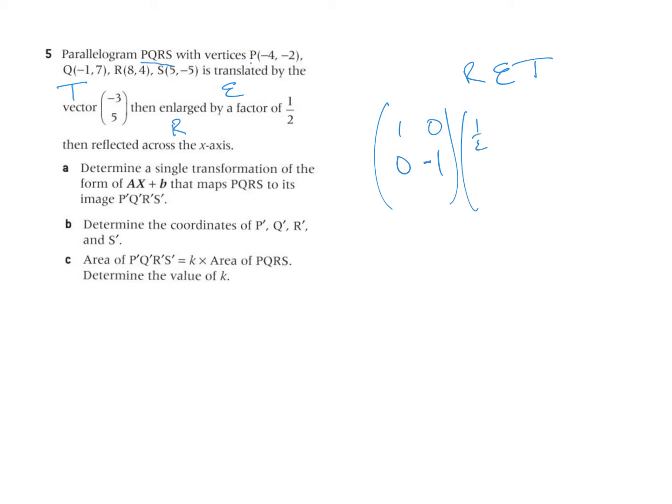E will simply be a half zero zero a half. The translation is a little bit trickier. Because what the translation does is it takes the point x, y, and it adds onto that point the vector negative three, five.